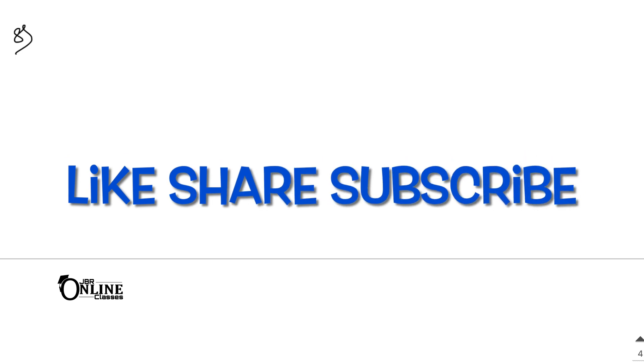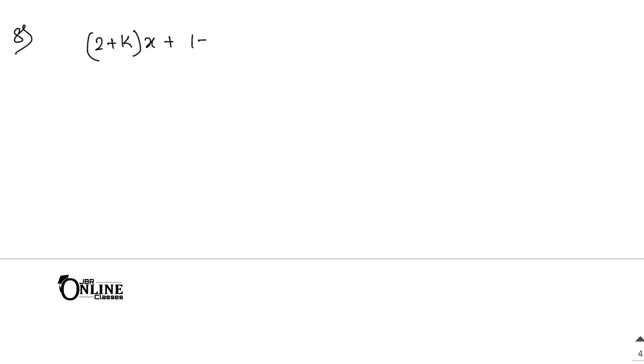Now sum number 8, this is the last sum for this video. So guys, if you like my video, please share this video and please subscribe my channel. In sum number 8: show that the straight lines 2 plus k into x plus 1 plus k into y equal to 5 plus 7k, for different real values of k, passes through a fixed point.